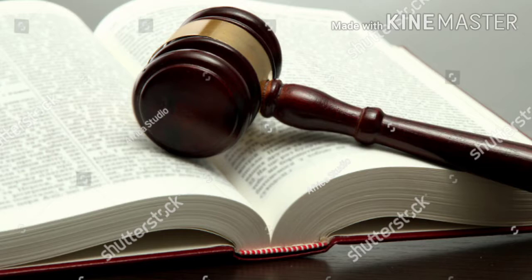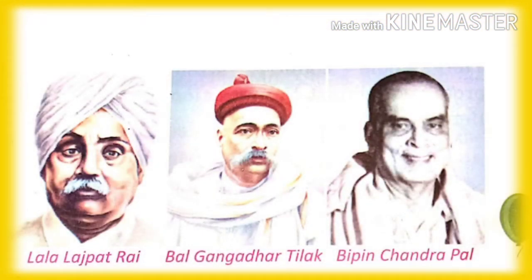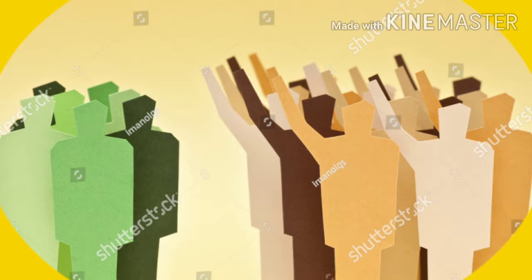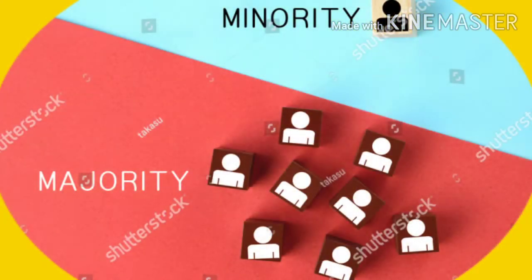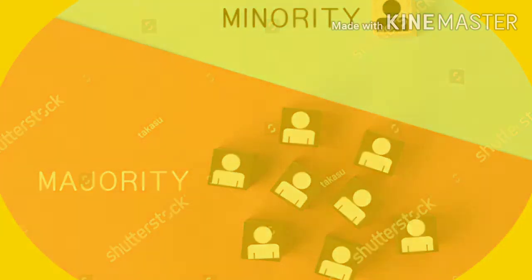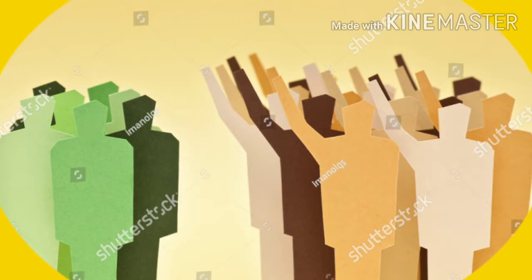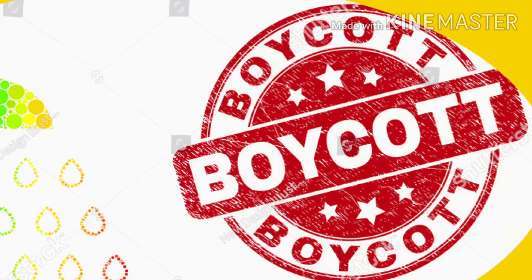Some members of the INC did not approve of the British approach, which ignored Indian issues. They were called the extremists. Leaders like Lala Lajpat Rai, Bal Gangadhar Tilak, and Bipin Chandra Pal were very critical of the British. In 1907, at the Surat session of Congress, there was a major difference of opinion between moderates and extremists. The extremist group was named Lal-Bal-Pal after Lala Lajpat Rai, Bal Gangadhar Tilak, and Bipin Chandra Pal. Besides advocating the Swadeshi movement, they advocated a total boycott amounting to non-cooperation and non-payment of taxes.